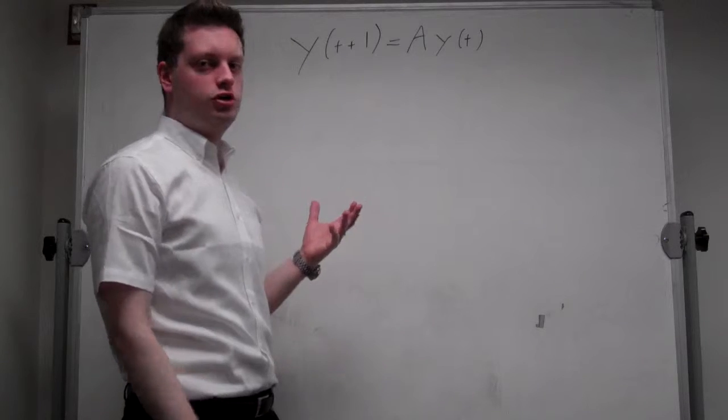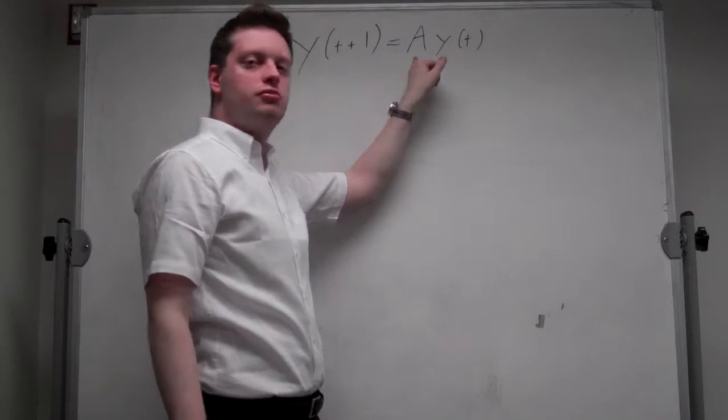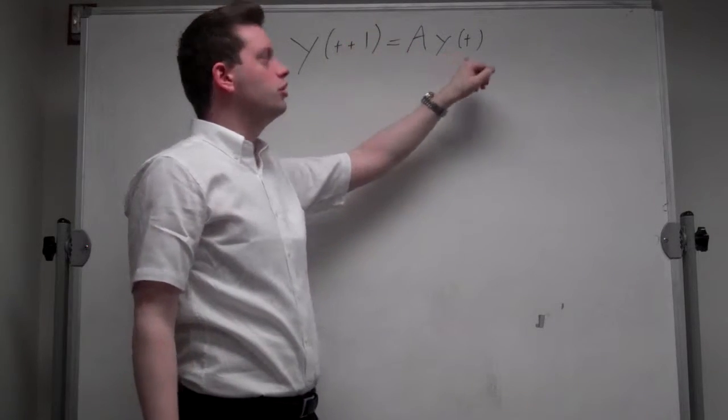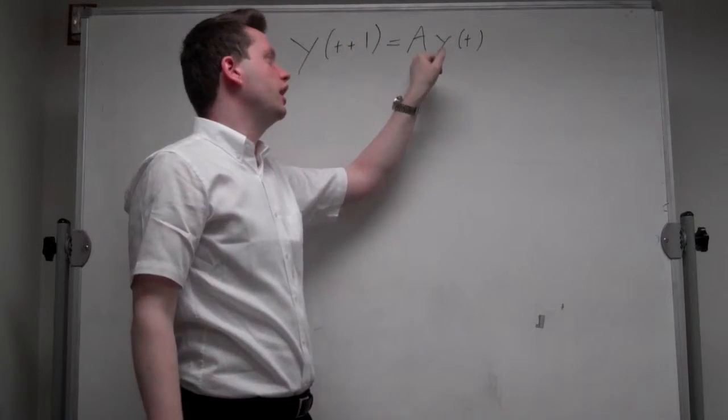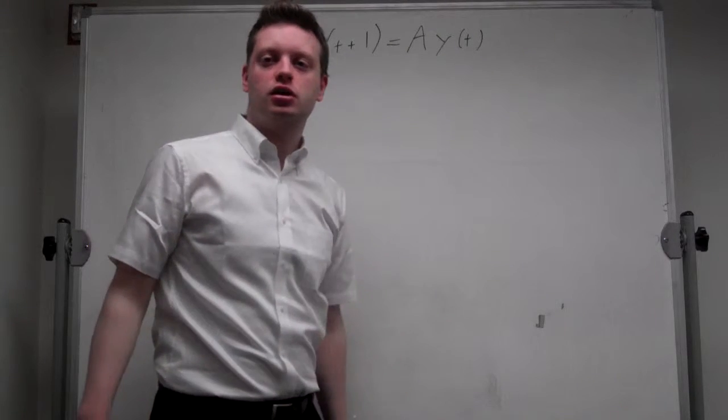This system is homogeneous because there is no additional term here. And we assume that y_t+1 and y_t are vectors. A is a 2 by 2 matrix and does not depend on time.